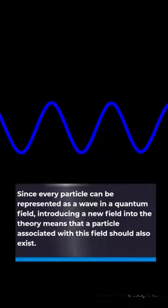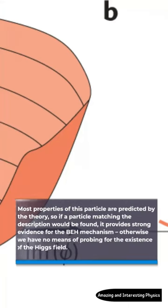Since every particle can be represented as a wave in a quantum field, introducing a new field into the theory means that a particle associated with this field should also exist.